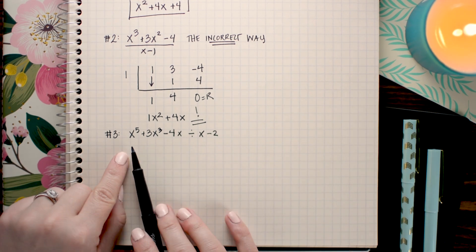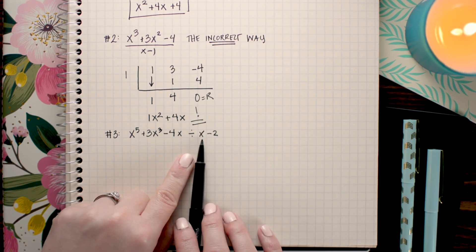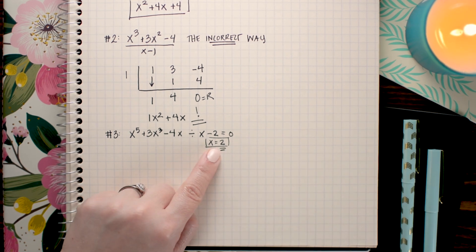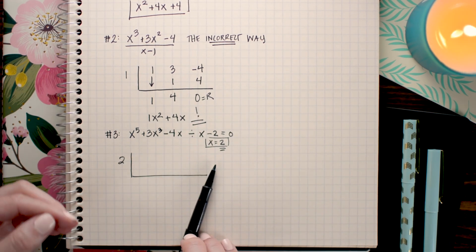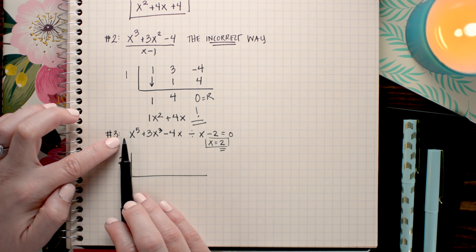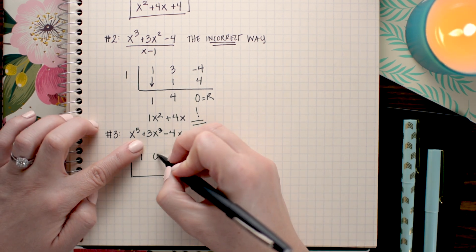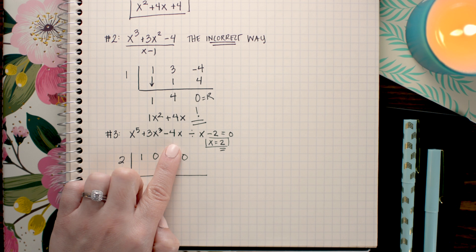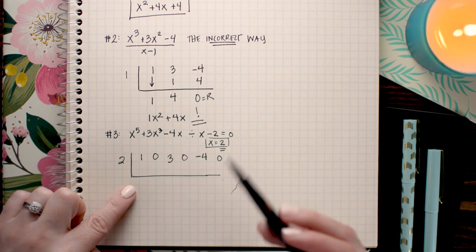In this next problem we have x to the fifth plus 3x cubed minus 4x divided by x minus 2. So I am going to start by setting x minus 2 equal to zero and solving for x. This now is going to be the value that I'm going to be dividing by. In my top row I'm going to place the coefficients, making sure to place a zero any time I have a missing term. So I start with an x to the fifth, so that will be 1x to the fifth. Next I move on to x to the fourth. There is no x to the fourth term, so I make sure to write a zero, followed by 3x cubed, 0x squared, negative 4x. And since I don't have a constant here I need to write a zero in for the constant. And I do my synthetic division.